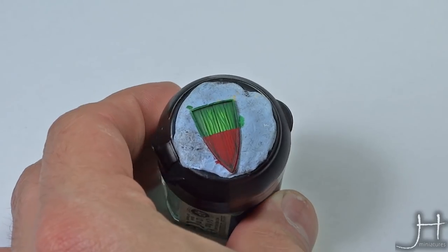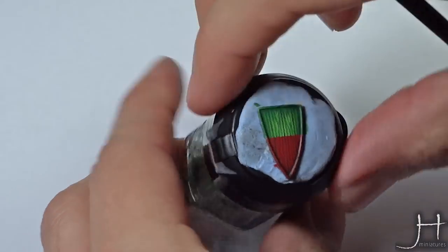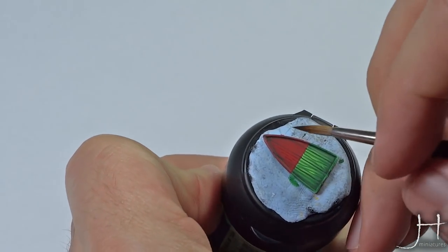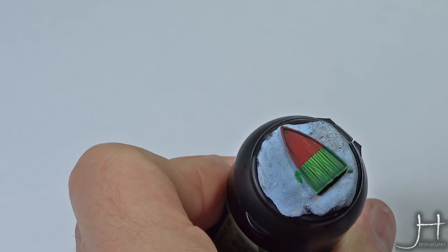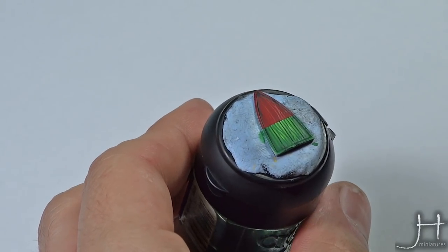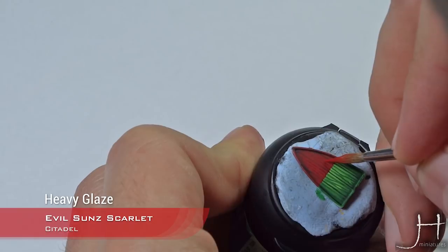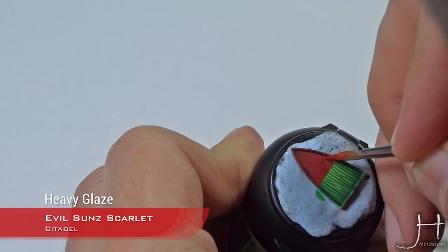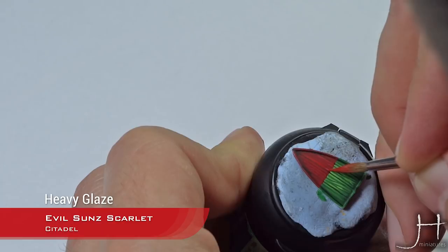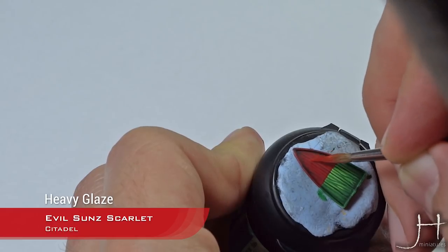Okay, we have all Mephiston Red now done and we will move to the first highlight. This will be Evil Sunz Scarlet. Again I will just turn the shield upside down so I can work, as you should, from dark to light in a single brush stroke with a heavy glaze consistency. Again from the darkest point to the lightest point. You know what I just said.